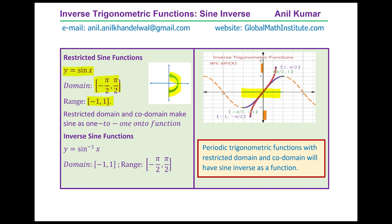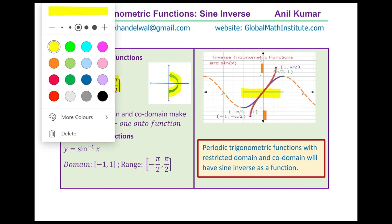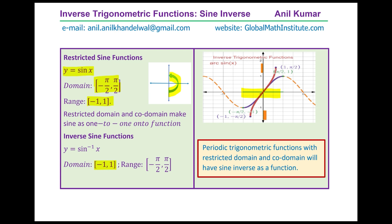What is the domain and range of sine inverse x? Well, the domain and range switch. The domain becomes from minus 1 to 1 and the range becomes minus pi by 2 to pi by 2. The graph of the inverse function is shown in red, with coordinate points from minus 1, minus pi by 2 to 1, pi by 2. The maximum value a sine inverse function can take is pi by 2.